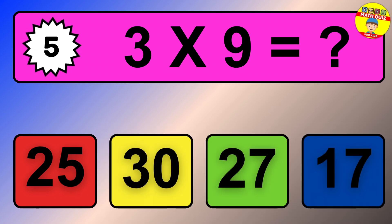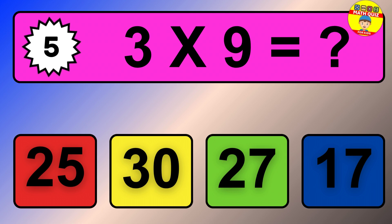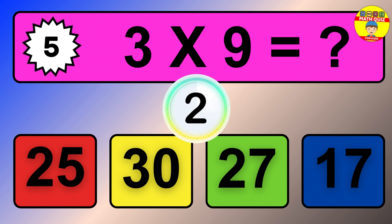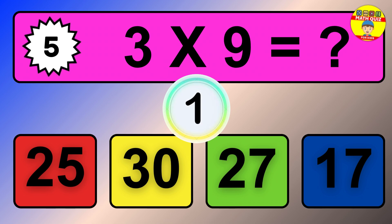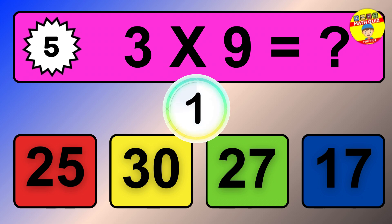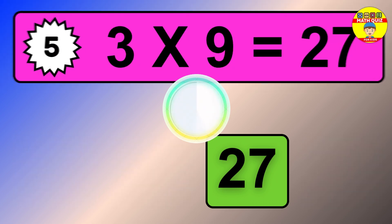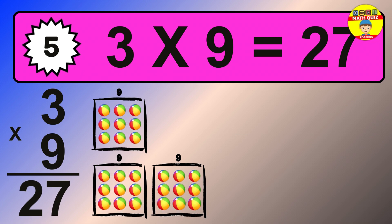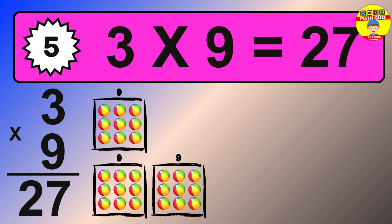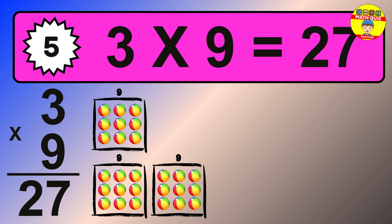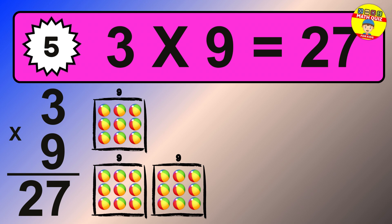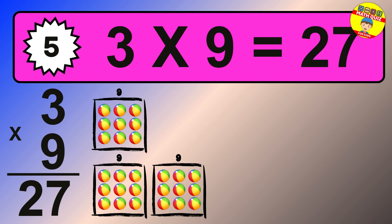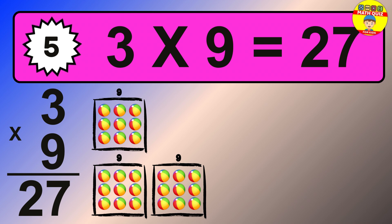Question 5. 3 times 9 equals what? The answer is 3 times 9 is 27. To calculate, we have 3 groups with 9 balls each one. So how many balls do we have? 27 balls.